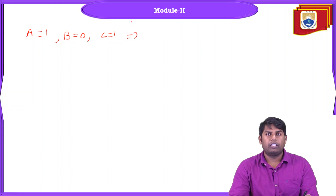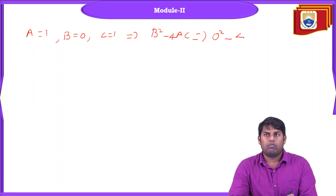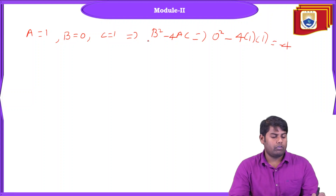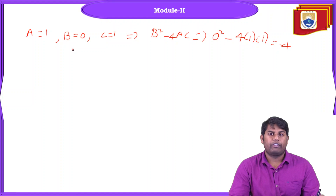Substituting into the discriminant formula B² − 4AC: 0² − 4·1·1 = −4. The discriminant is less than zero, so this equation falls under the elliptic category. We conclude that the Laplace equation ∂²φ/∂x² + ∂²φ/∂y² = 0 is an elliptic equation.